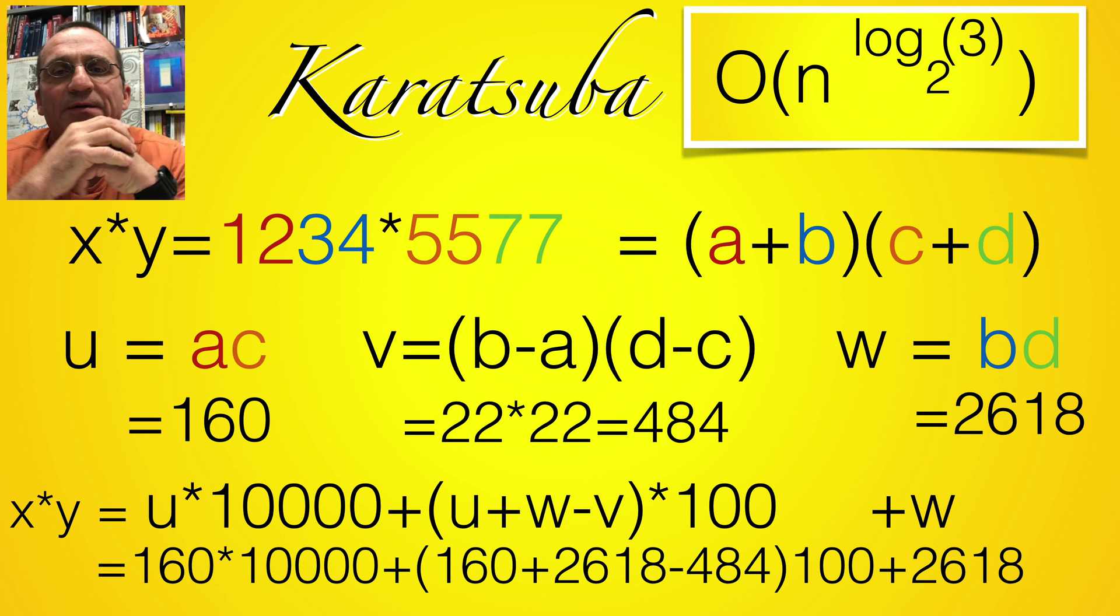One possibility to do that is the Karatsuba method. Here's an example with two four-digit numbers. We write x is a plus b, y is c plus d, then compute u and v and w as indicated. Now compute u times 10,000 plus u plus v minus v times 1,000 plus w. We have to do a little bit more additions, but that's no problem. The point is that we need only three multiplications. So the complexity drops to n to the power of 1.58 or something.